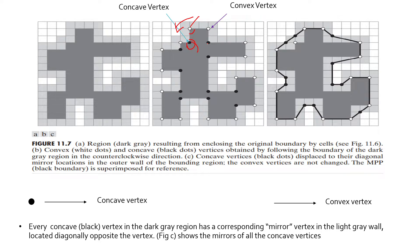The convex vertices are denoted with white dots and the concave vertices are denoted with black dots. Also, we can see that every concave vertex has a mirror vertex alongside the outer wall of the light grey boundary. So if we join all the white vertices and the mirrored concave vertices, we will be obtaining a minimum parameter polygon, which is represented in figure 3.